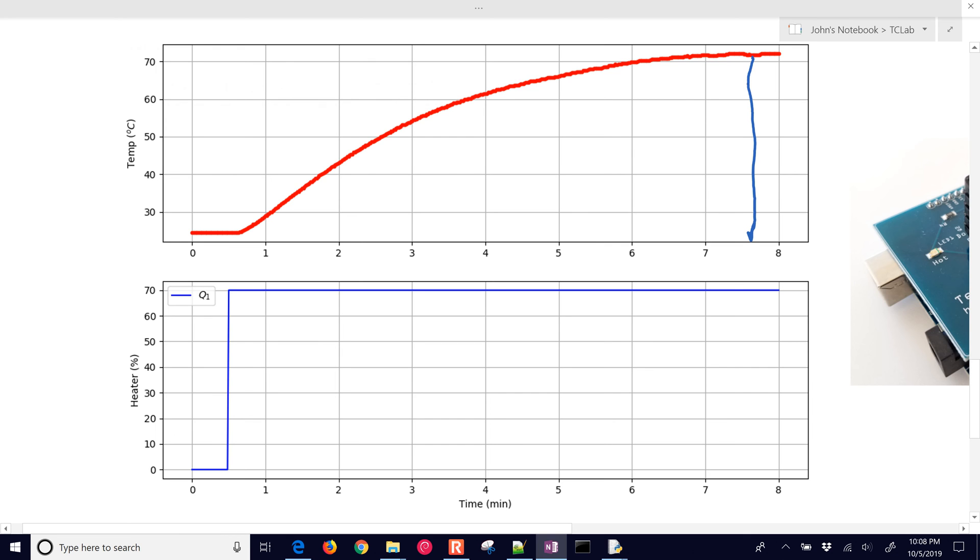So here we go. We have our first one, and this is delta Y, and that's about equal to 72 minus, I'd say it's about 23. So that's going to be about 49 degrees Celsius, and then our delta U is going to be 70.